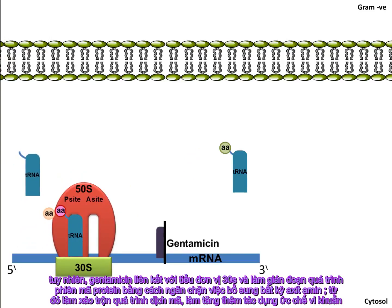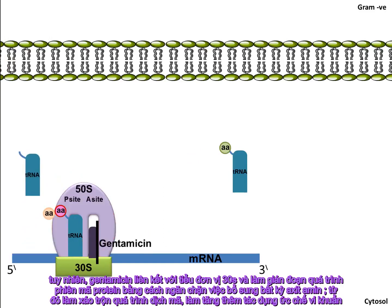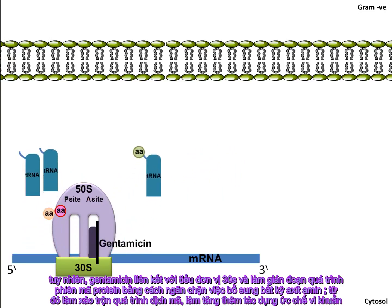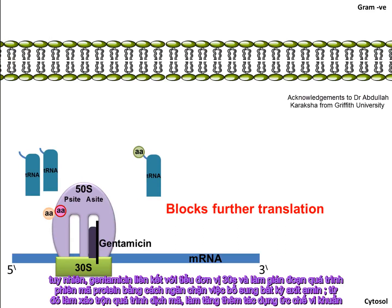However, gentamicin binds to the 30S ribosomal subunit and disrupts the protein translation process by blocking the addition of any extra amino acids. Therefore, gentamicin blocks any further translation of protein synthesis and consequently adds to the bacteriostatic effect.